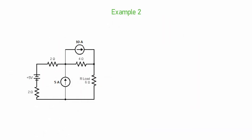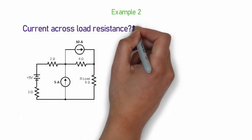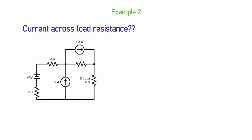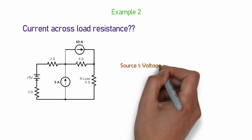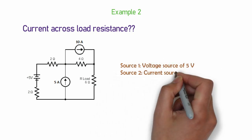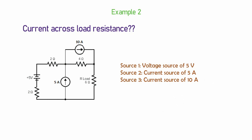In this sum, we are going to calculate current across load resistance. This circuit contains three sources. One 5V voltage source and two current sources of 5A and 10A respectively.